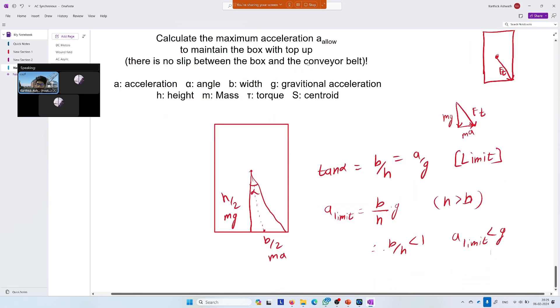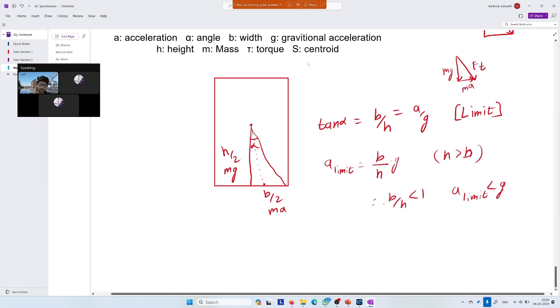Here we are not thinking about slipping case. It can happen that the box will topple before it starts slipping. Then the limiting case is the toppling. If a_limit here is less than a_no_slip, a_limit, because after that the box will fall down, is the max allowed acceleration. So this is how you solve. Basically it's about this triangle, and you have B/2, H/2, and along B/2 you have Ma, and along H/2 you have Mg. α is the same for both triangles, so I can equate them, and I get this.